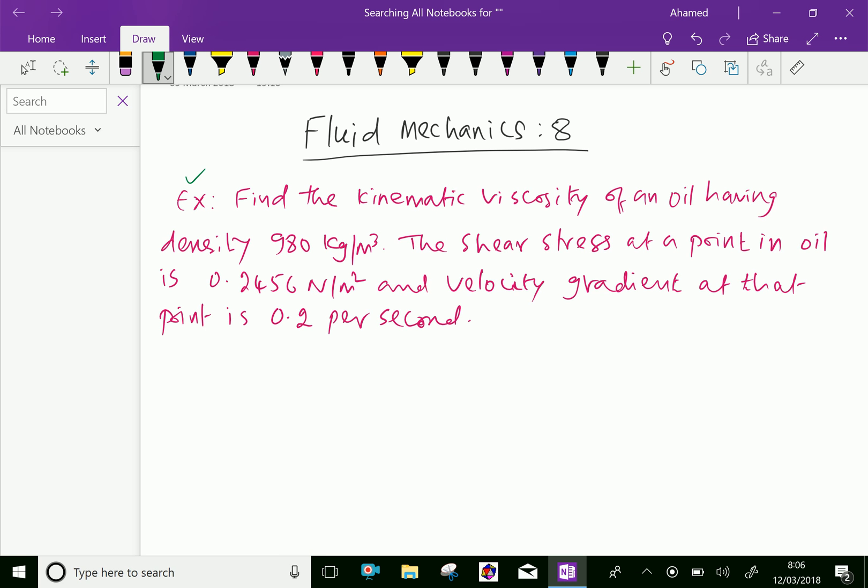Example: Find the kinematic viscosity of an oil having density 980 kg per meter cube. The shear stress at a point in oil is 0.2456 Newton per meter square and velocity gradient at that point is 0.2 per second.